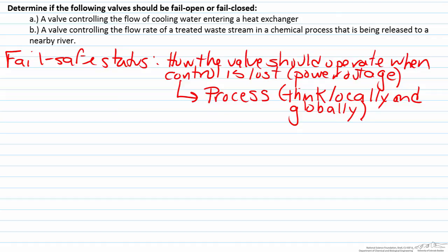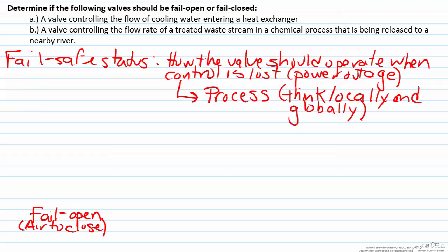There are two types of fail safe statuses for valves. The first is fail open, also known as air to close. Many valves are pneumatic and based on air pressure, so we need to increase the air in order to close the valve, because that is the opposite of the fail safe status. If the valve fails with no air, we want the system to be fully open, so more air is required to close it.